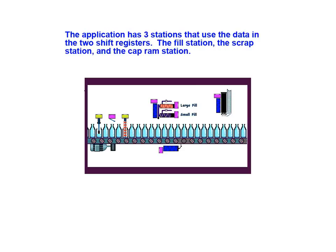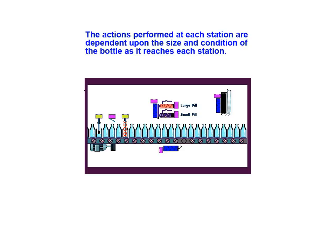This application has three stations that use the data in the two shift registers: the fill station, the scrap station, and the cap ram station. The actions performed at these stations are dependent upon the size and condition of the bottle as it reaches each station.